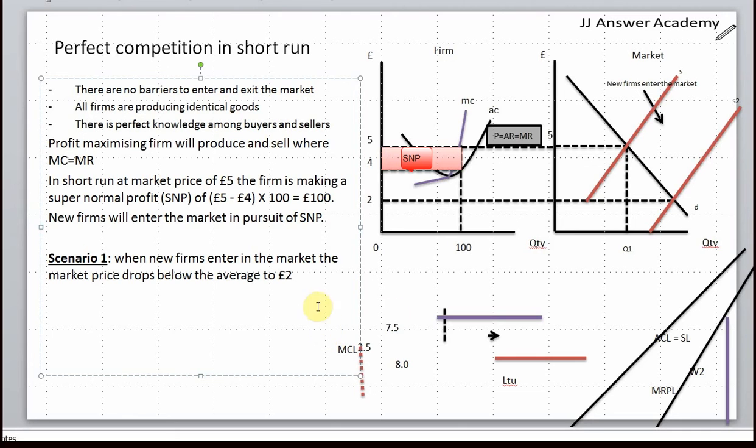The average cost is four pounds, but the price has dropped to two pounds. So are other firms making profit or are they making a loss? What will the firms do? Will they stay in the market or exit the market? And why do you think they are able to exit the market? There are no barriers to exit.